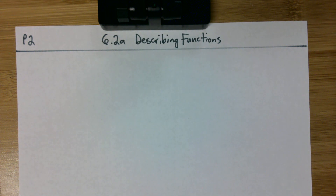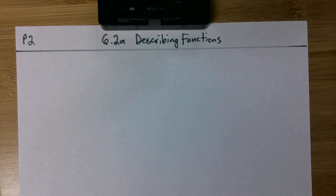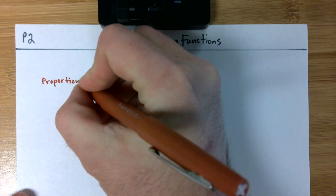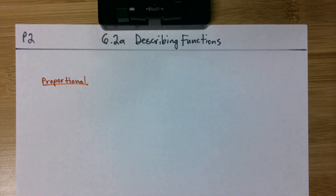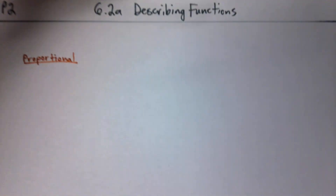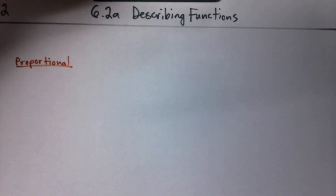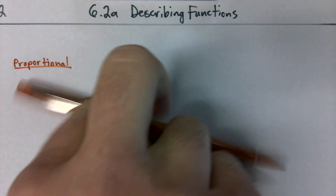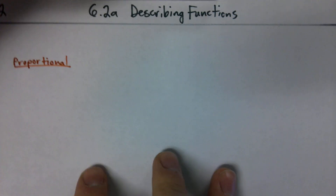We've got four terms we're going to be using, and they should all be fairly familiar terms to you. Let's talk about the first one. The first one is proportional. Give me a thumbs up if that word sounds familiar to you in this class. We talked about proportional relationships for weeks — even the week I wasn't here, you guys were talking about proportional relationships. And a proportional relationship when graphed is going to look something like this.